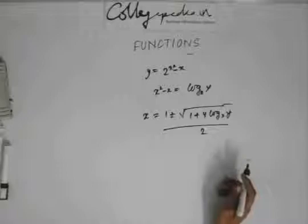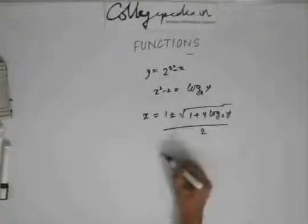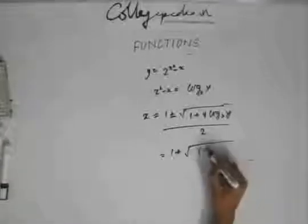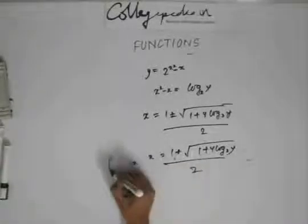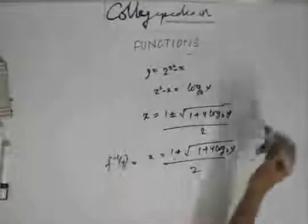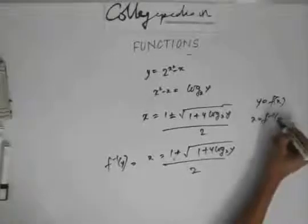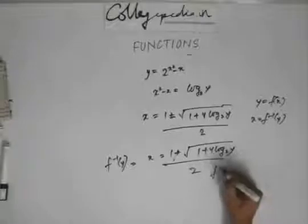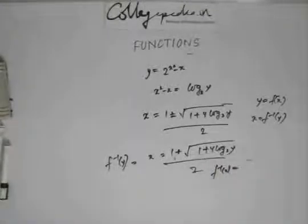The solution to this quadratic is x equals 1 plus or minus the square root of 1 plus 4 log base 2 of y, all divided by 2. Now you know that x is a positive quantity — it's always greater than 1 — so I can't take the negative sign. I will take only the positive sign: x equals 1 plus square root of 1 plus 4 log base 2 of y, divided by 2. This is x, or this is f inverse of y. Since y equals f(x), x equals f inverse of y. To find f inverse of x, just replace y with x. So f inverse(x) is that expression with y replaced by x.